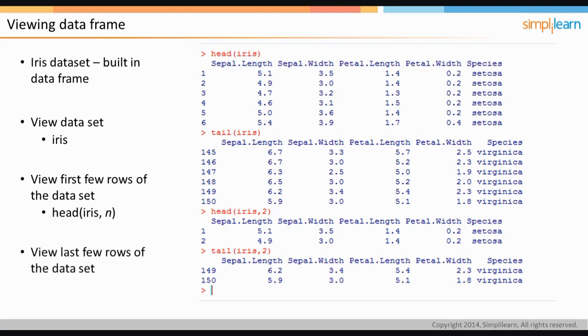To view the last few records, the tail function is used. The syntax is similar to the head function: tail of dataset name, comma number of rows. In the next slide, we will look at commands to view the dimensions of data.